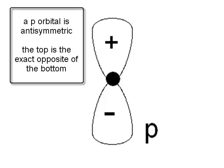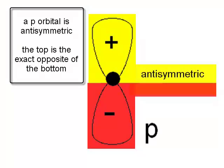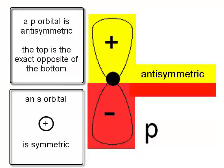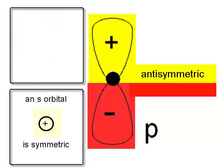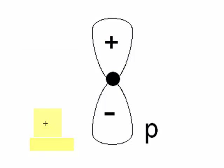The top is exactly the opposite to the bottom. This orbital is anti-symmetric, whereas the s orbital — that beautiful easy sphere — is completely the same. Whichever way you inspect a sphere, it's the same. That's a symmetrical orbital.